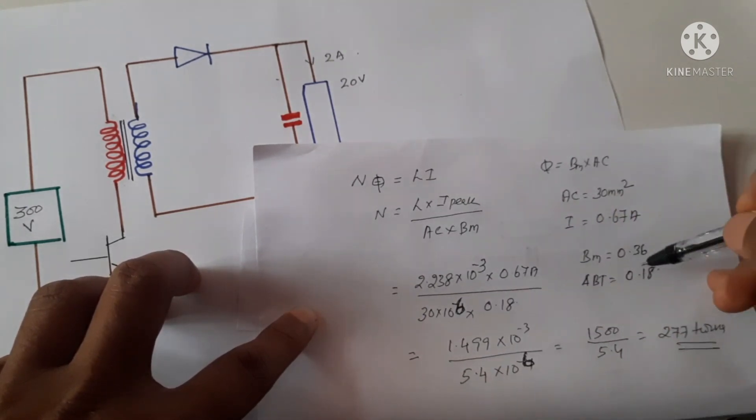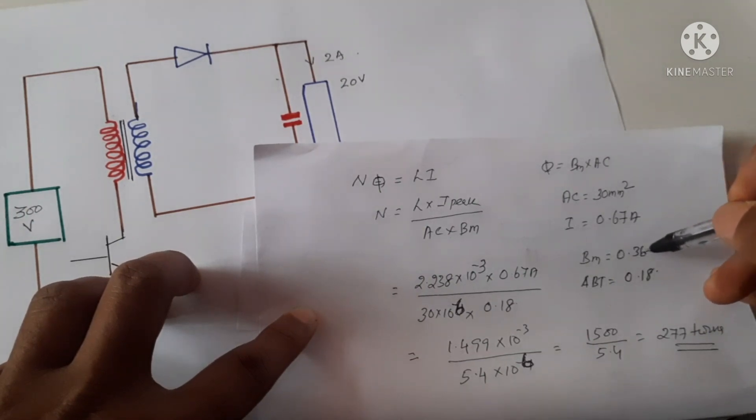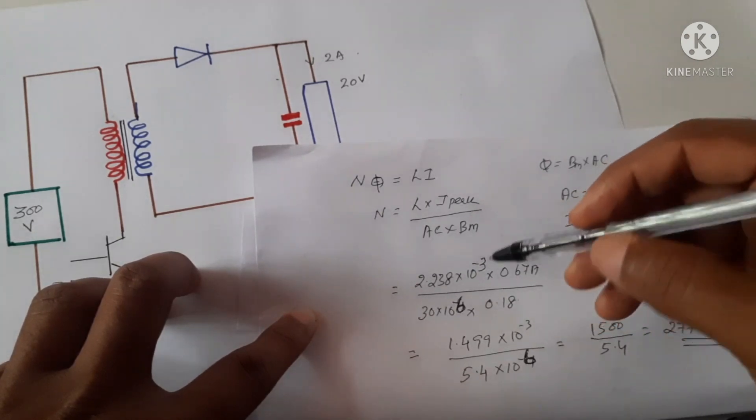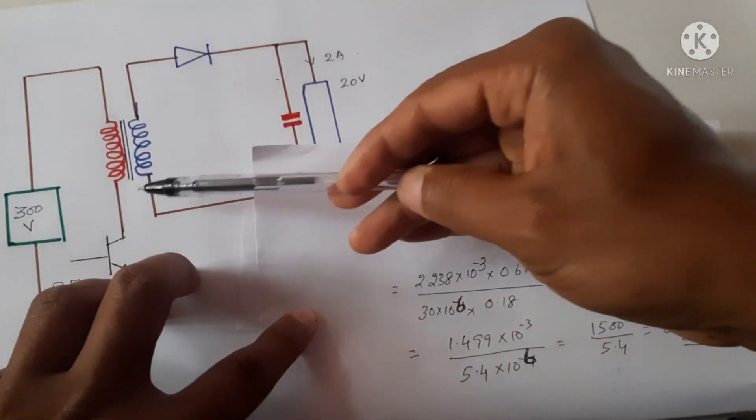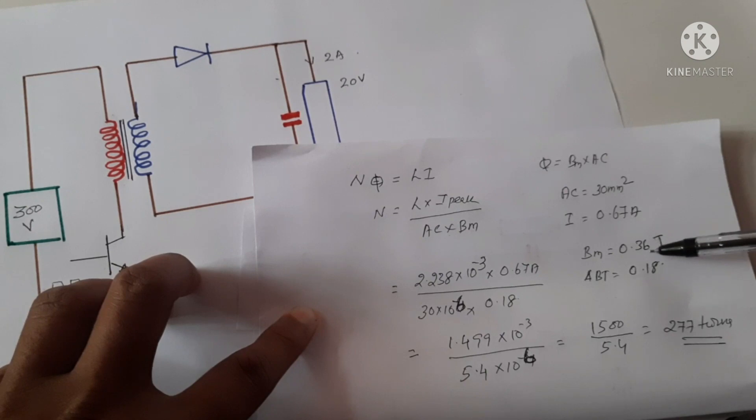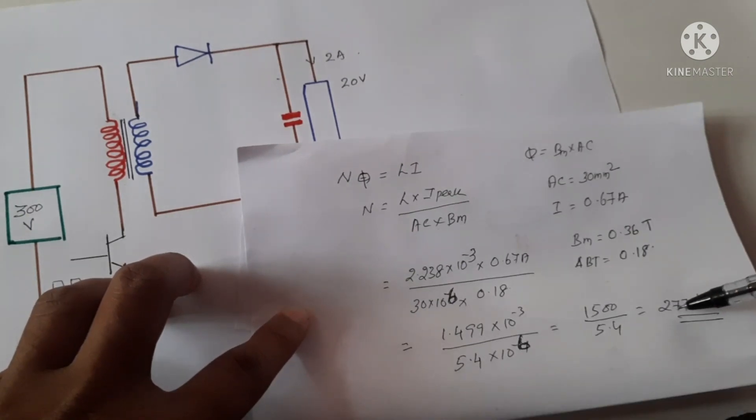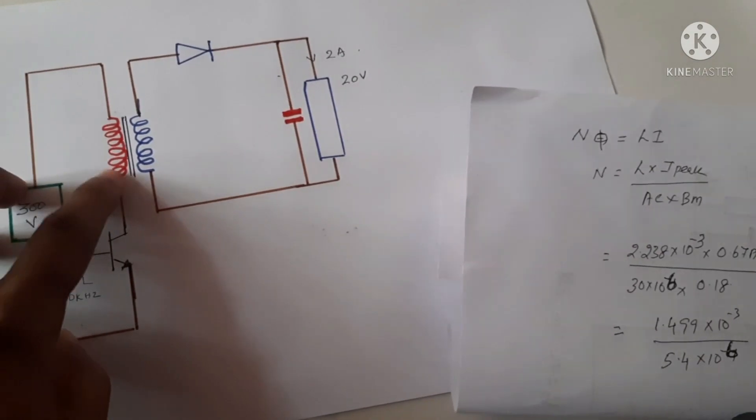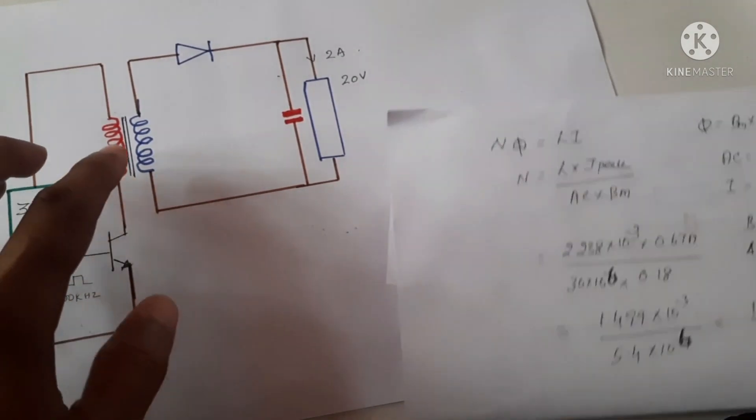And Bm, the maximum flux density is 0.36 tesla. We will take half of this because we don't want to get the core to saturation. So we will take the value in between, so half of this value will be taken, that will be 0.18. If we put all these values, we get 277 turns required at the input for this inductance.